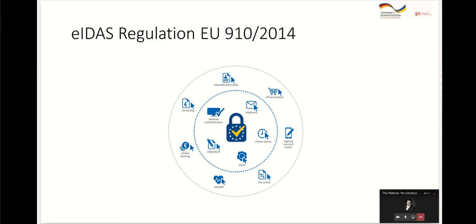The European Union tried to build digital trust all over the world based on their approach to trust. At the heart of the EIDAS regulation there are five core services: e-signature, e-seal, e-timestamp, e-delivery, and website authentication.